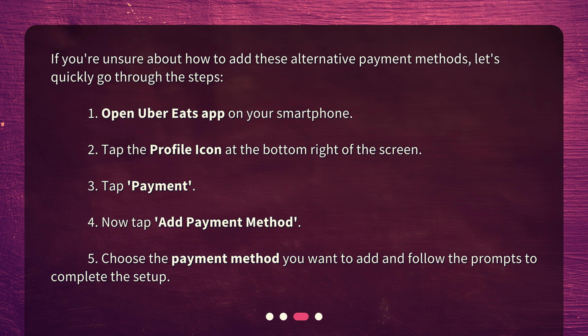4. Tap 'Add Payment Method.' 5. Choose the payment method you want to add and follow the prompts to complete the setup.